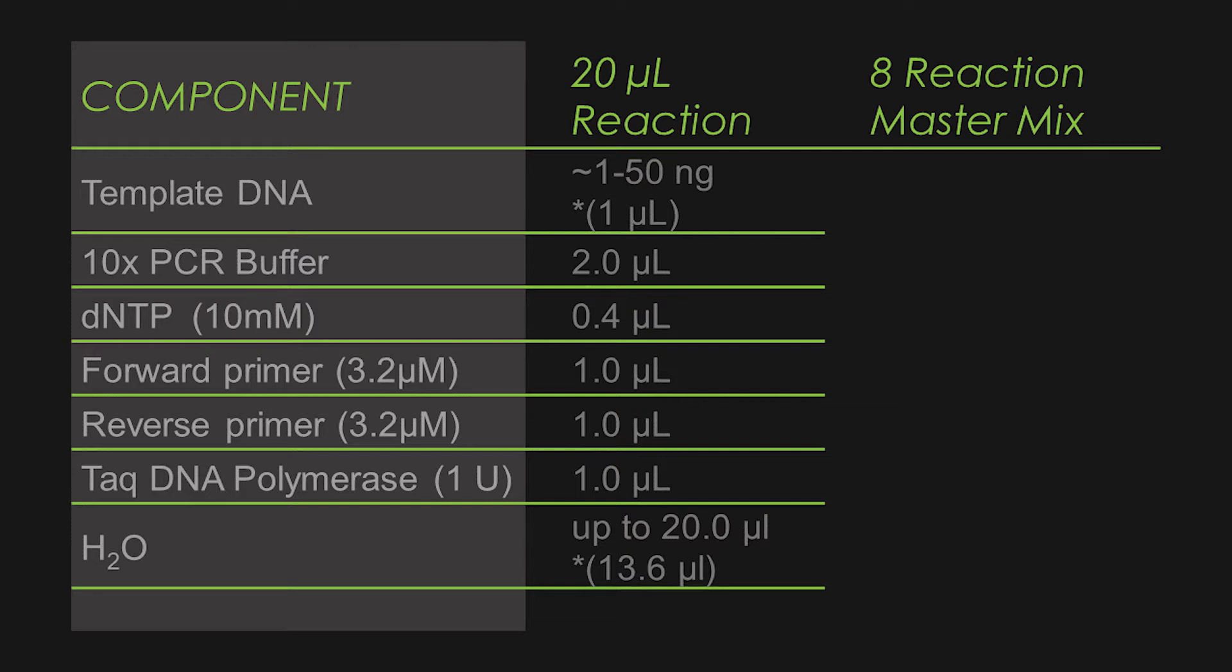Now in our example, we assume that your DNA template is around 15 nanograms per microliter, and we would only need 1 microliter for each of the templates. But let's make sure to include that volume when we calculate the actual volume of water you're going to need to add. So as I total up all the component volumes, I get 6.4 microliters, which leaves me needing 13.6 microliters of water to get to our final reaction volume of 20 microliters.